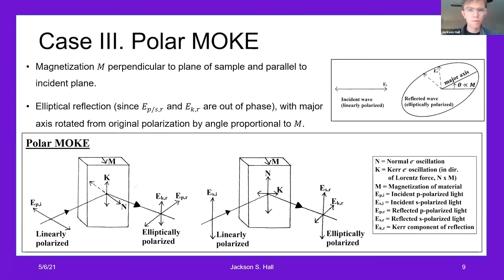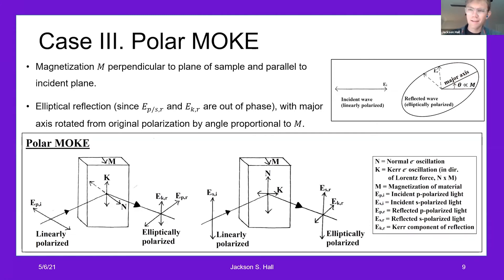Finally, the third case is polar MOKE, where the magnetization is perpendicular to the plane of the sample and parallel to the incident plane. This creates a similar effect to longitudinal MOKE: the linearly polarized incident wave is reflected into an elliptically polarized wave, with the major axis rotated by an angle proportional to the magnetization of the sample. The derivation follows a similar idea to the first case.